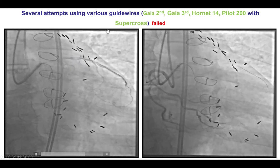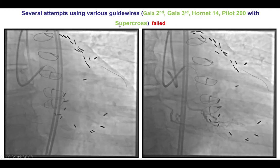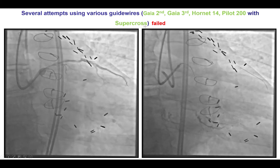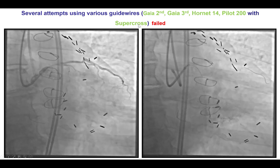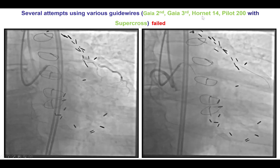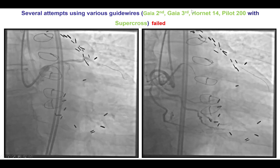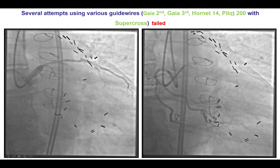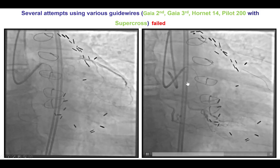Attempts were made to re-canalize using a Supercross 120 microcatheter that has a distal bend and various guidewires such as the Gaia 2nd and 3rd, the Hornet, as well as the Pilot 200, without success.